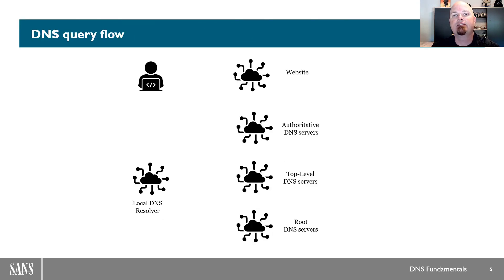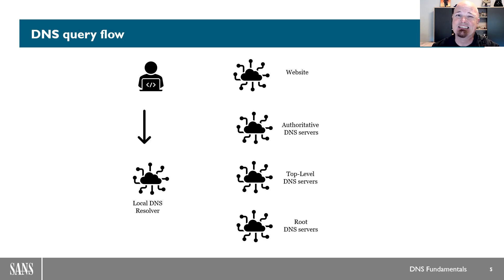Let's take a look at how DNS flows with a simple example. We start out as a computer user in the top left, wanting to load the web page at www.sans.org. There are a lot of things that have to happen before that request gets sent to the web server — we have to do the translation to find the IP address associated with www.sans.org. The first thing that happens is we query our local DNS server, but the local DNS server says it's not in charge of the records for sans.org, so it's going to recurse — asking other DNS servers to find this information and return the answer to the client.